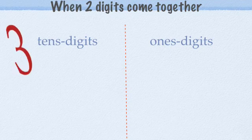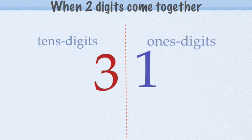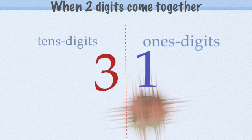Thirty-one would have one penny and three dimes.